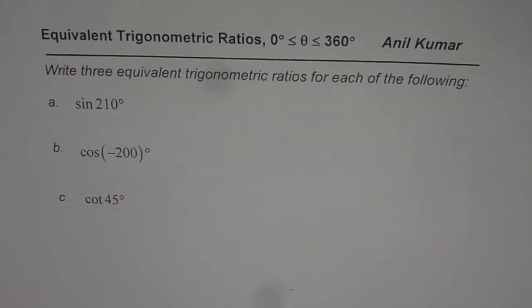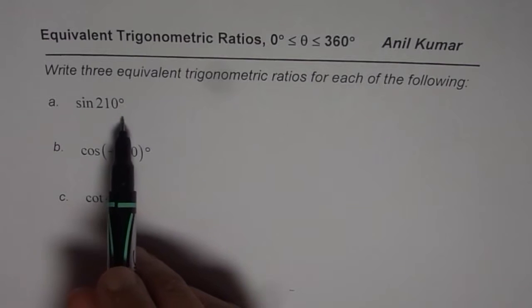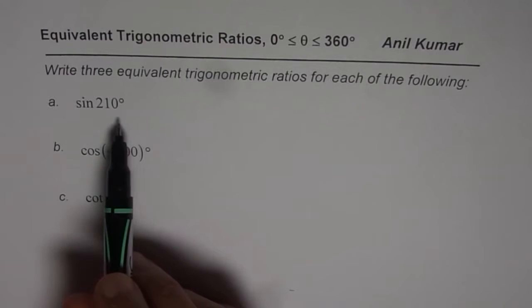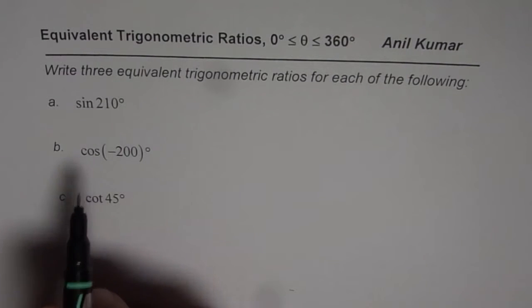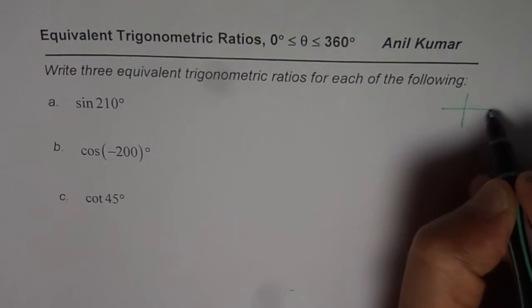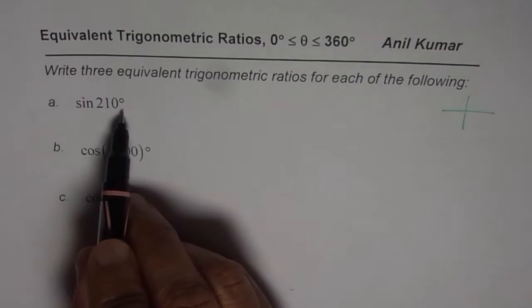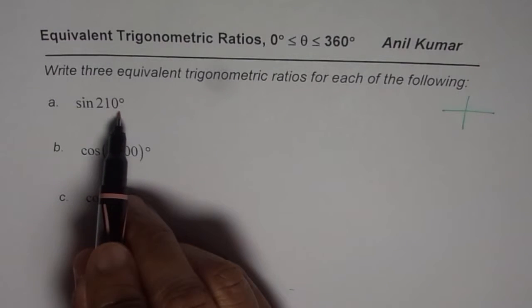You can pause the video, answer the question, and then look into my suggestions. Now, as we learn to find equivalent trigonometric ratios, we have to look into two things. The first one is the CAST rule, which tells us whether the expected value is positive or negative.